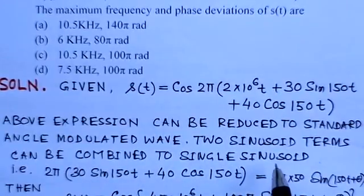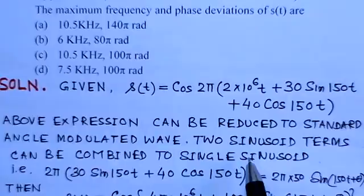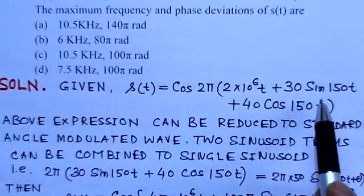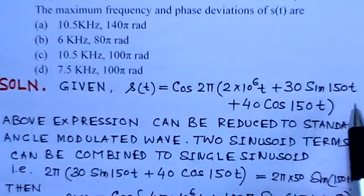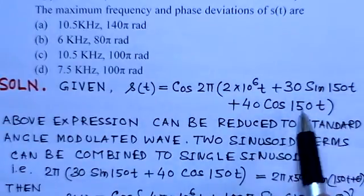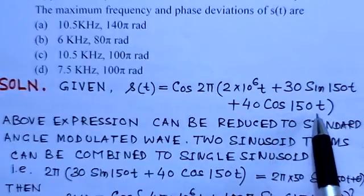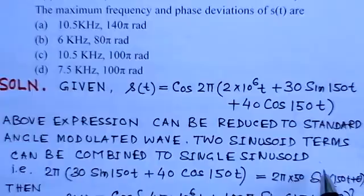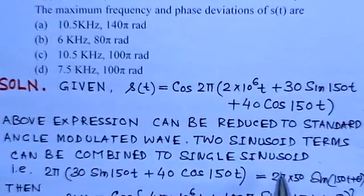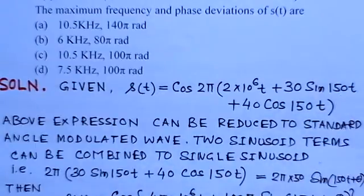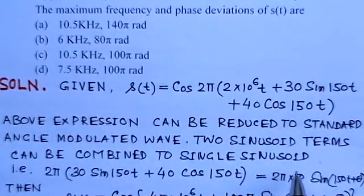If you notice the given equation, the terms here, like sin 150t and cos 150t contained in the second and third term, they are sinusoids of the same frequency, so they can be combined to a single sinusoid.